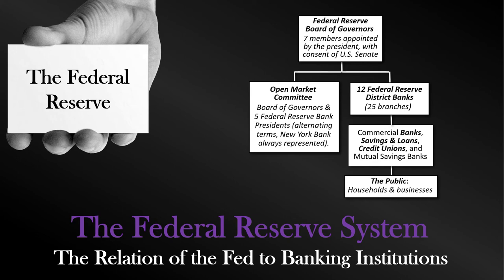The Federal Open Market Committee is a 12-member board that establishes Fed policy regarding the buying and selling of government securities. It consists of the seven Board of Governors plus five Federal Reserve Bank presidents serving alternating terms — though the New York Bank is always represented. The FOMC typically meets eight times a year in Washington, D.C., and can meet more often if economic conditions require. Under the Federal Reserve, we have the Board of Governors and also 12 Federal Reserve district banks, with commercial banks, savings and loans, and credit unions under the purview of these regional district banks and their 25 branches.